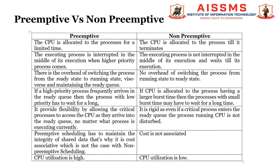In primitive CPU scheduling, there is overhead of switching the process from ready state to running state and vice versa, and maintaining the ready queue, whereas in non-primitive CPU scheduling there is no overhead of switching. In primitive scheduling, if a high priority process frequently arises in the ready queue, the low priority process has to wait for a long time. In non-primitive scheduling, if the CPU is allocated to a process with a larger burst time, processes with smaller burst time may have to wait for a longer duration.